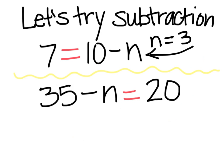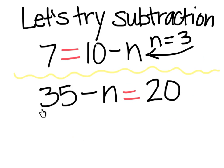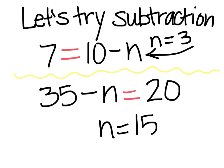Let's try this other one: thirty-five take away N — that's my unknown number, that's the part I don't know — is equal to 20. If I have 35 and I take away a number, I need to get 20. If I take two tens away from 35, how much does that leave me? N is equal to 15.